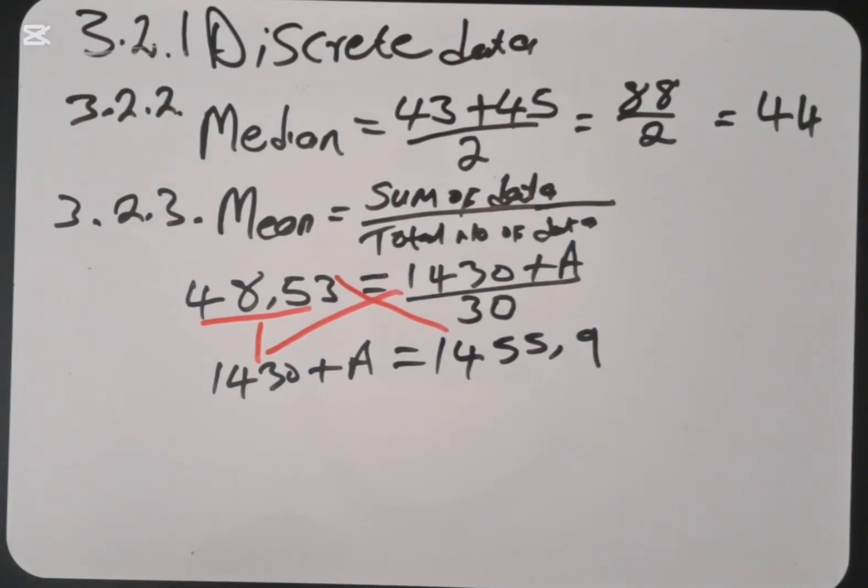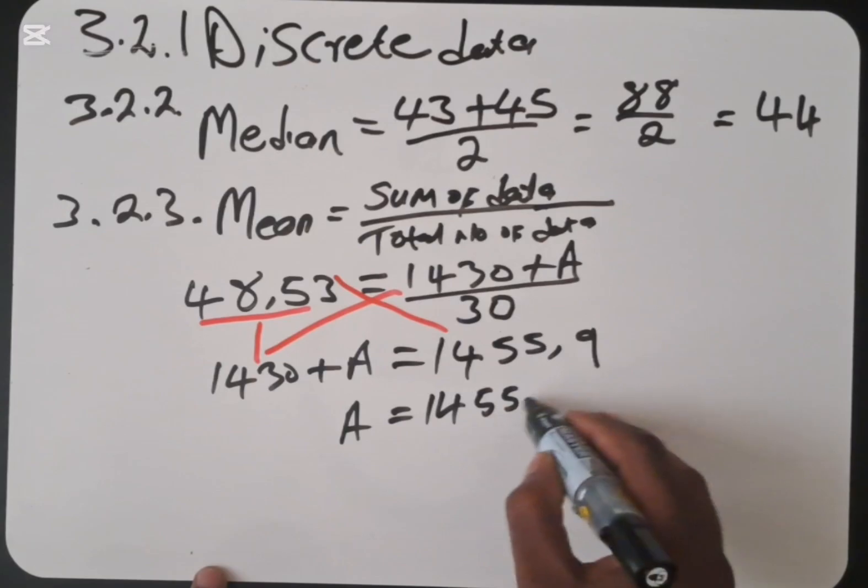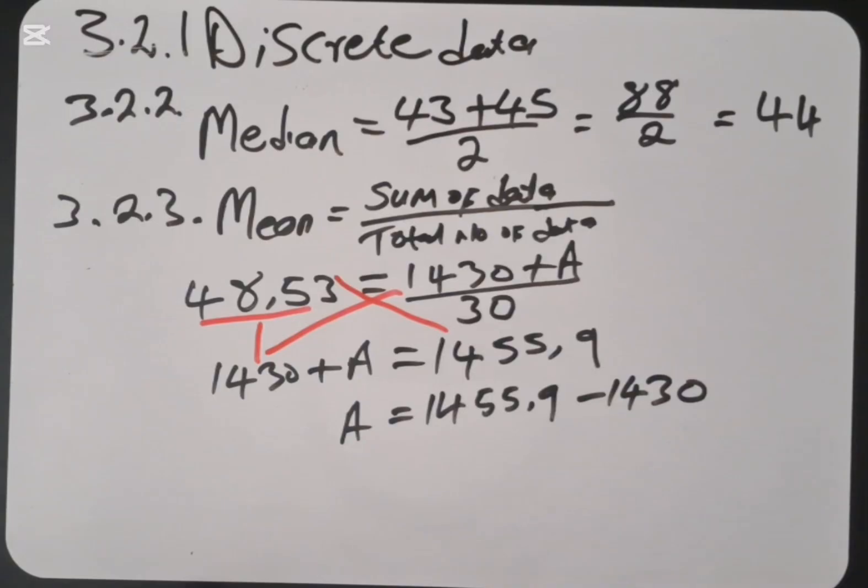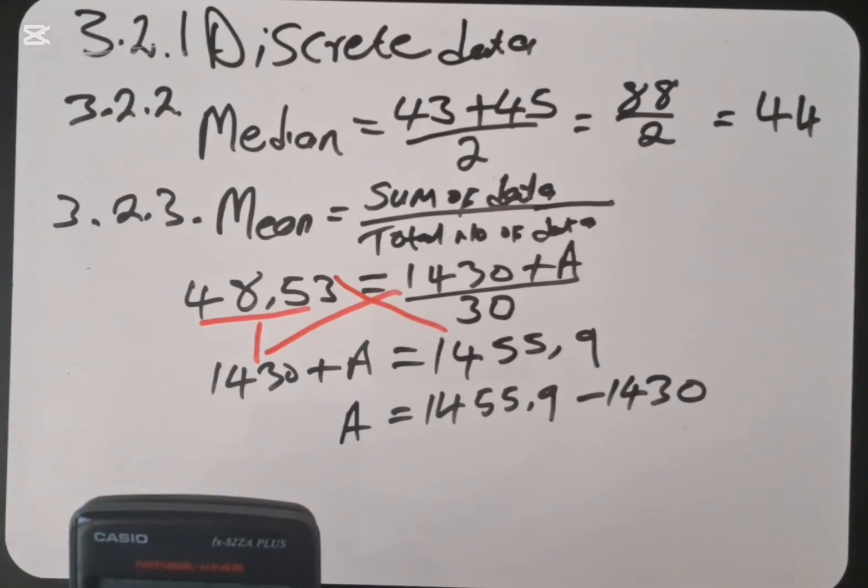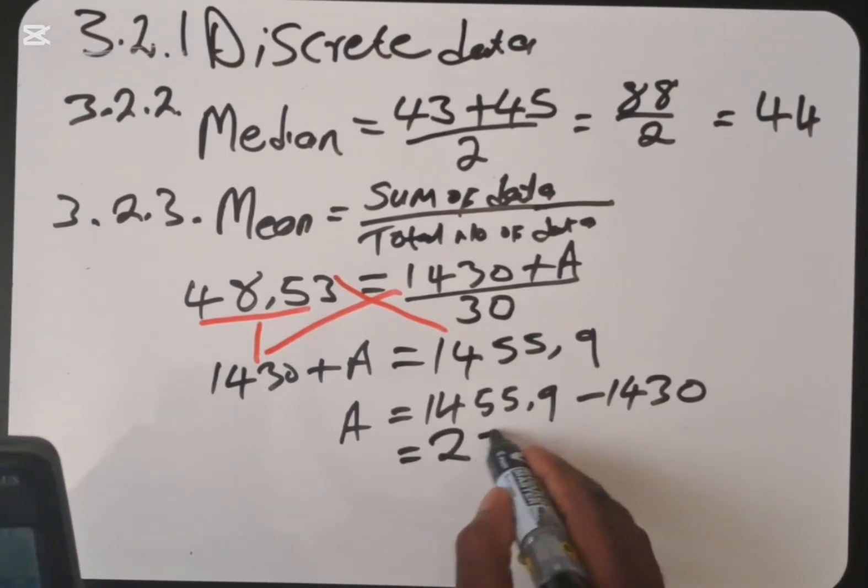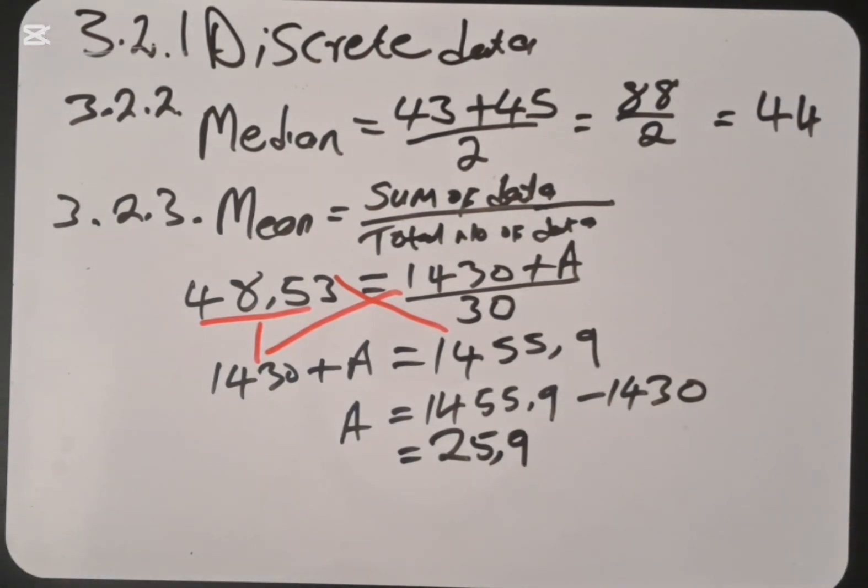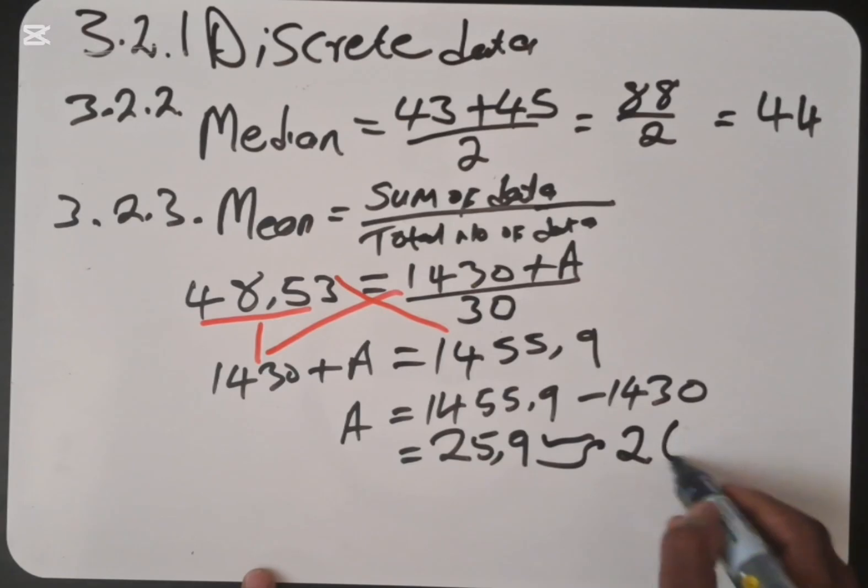So now we are solving for A. So the value of A here is going to be, we take this one to the other side. It's 1455.9 minus 1430. We found that our answer here is 25.9. And then if you look at the question, it says calculate the value of A for class B if the mean is. So because we are talking about the marks here, we cannot have 25.9 marks. So this one is going to be approximately 26. Our answer is going to be 26.